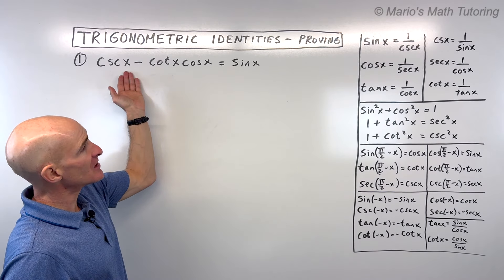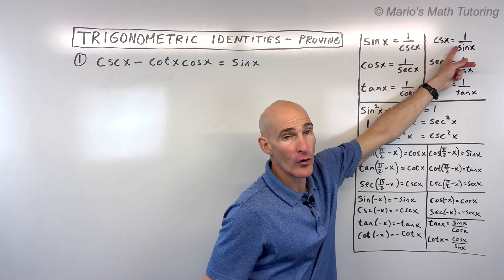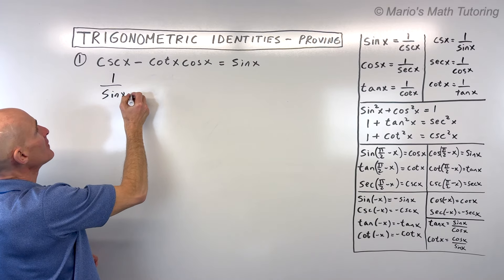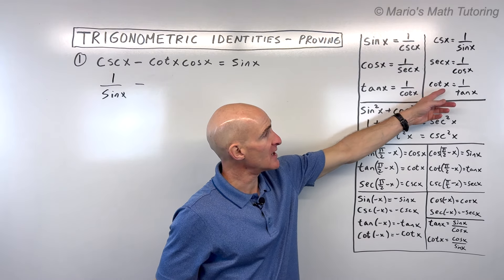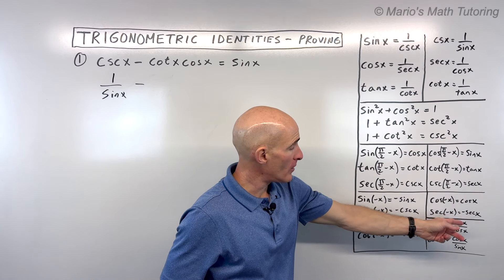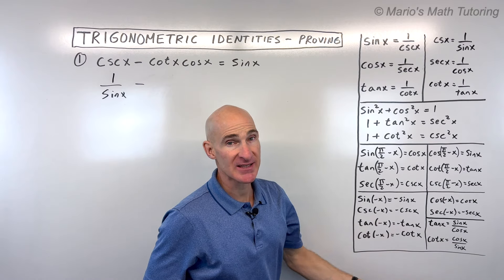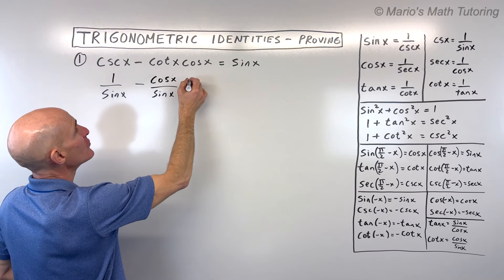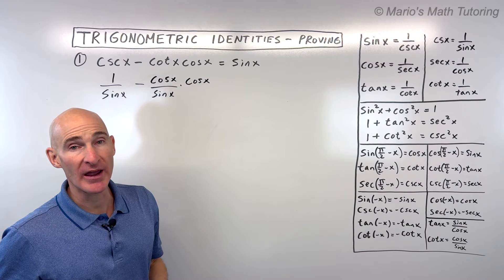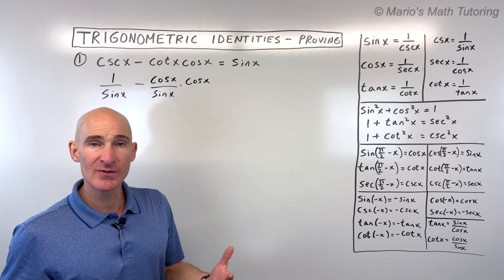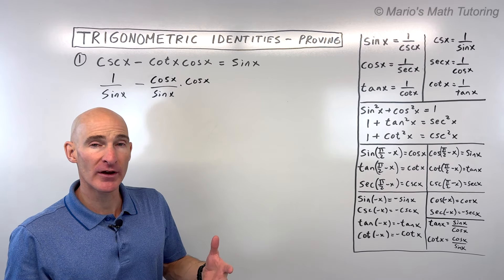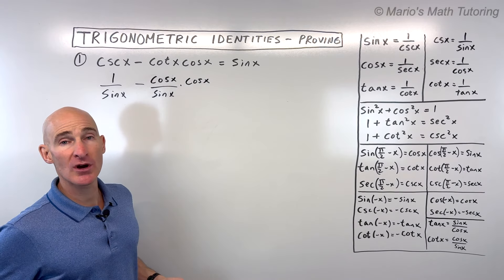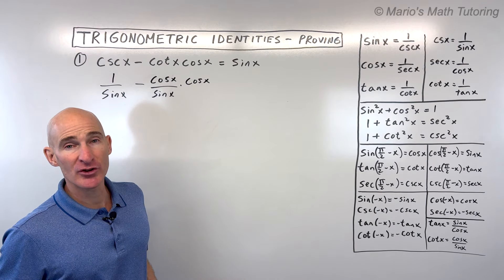Let's start by substituting cosecant x with 1 over sine x — these are called the reciprocal identities. For cotangent x, we could say it's 1 over tangent x, or that cotangent x equals cosine x divided by sine x — that's what I'll use here. How do you know what substitutions to make? As you do these more and more, you'll get experience and more of a feel for it. You can't really make a mistake as long as they're equivalent — it might take a couple more steps, but you'll get there.